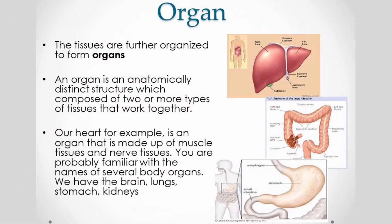The tissues are further organized to form organs. An organ is an anatomically distinct structure composed of two or more types of tissue that work together. Our heart, for example, is an organ that is made up of muscle tissue and nerve tissue. You are probably familiar with the names of several body organs.